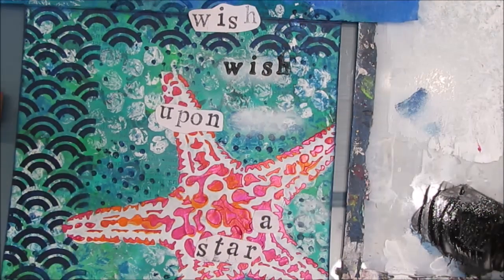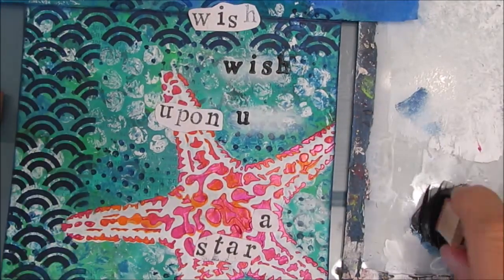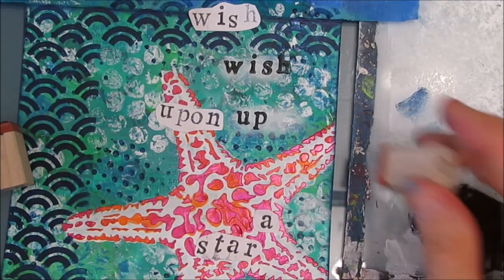You can see how that one's not so much on the white and you lose a little bit of the H, which is why I wanted that white halo underneath the letters.